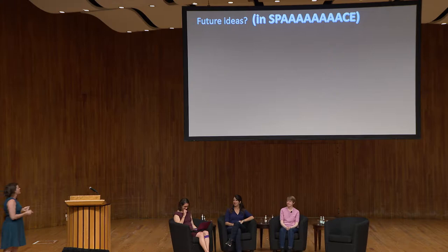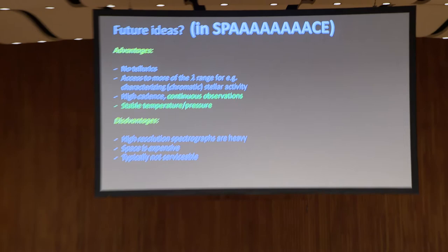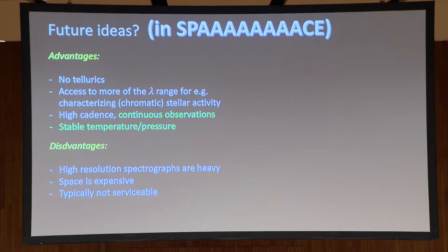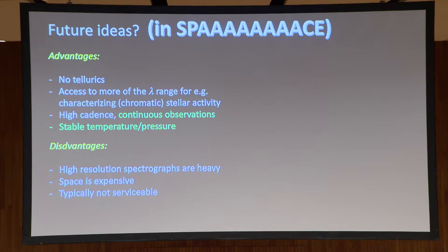How do we take high resolution spectrographs to space? Why would we go to space? You get above the telluric lines, which helps a lot. Getting above the atmosphere also gives you access to more wavelength range, and I explained why it's important to get as much wavelength coverage as possible. You can get high cadence continuous observations — being able to observe continuously helps secure a planet's period without being fooled by aliases. Continuous observations also give you a better handle on stellar activity when simultaneously modeling the stellar activity and the planet spectrum. Stable temperature and pressure in a far orbit is also a plus.